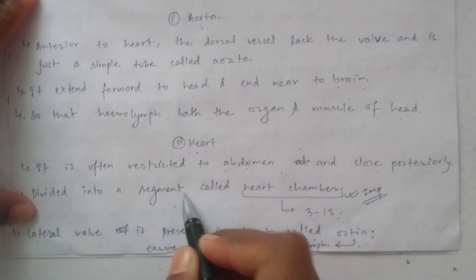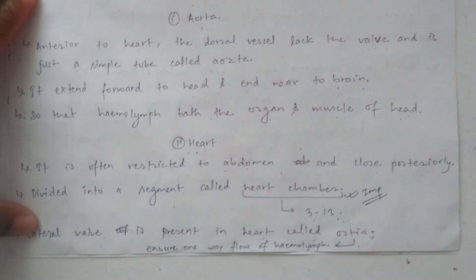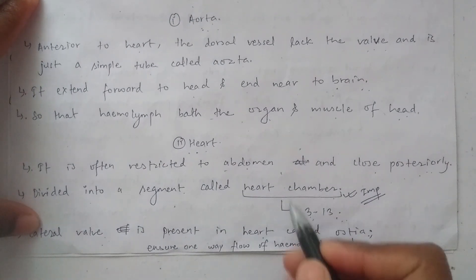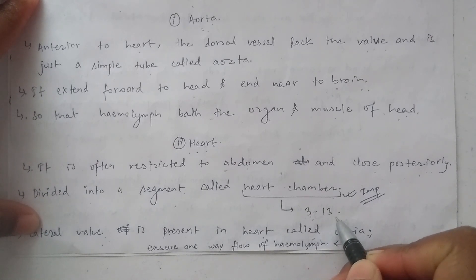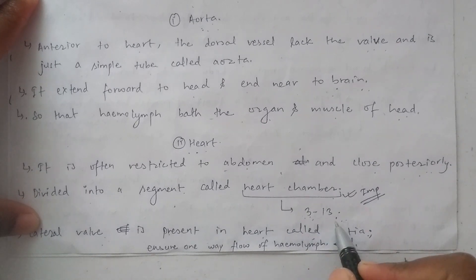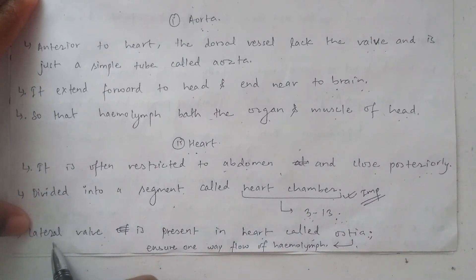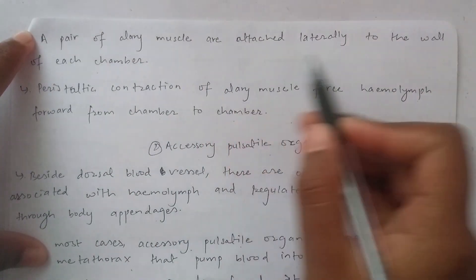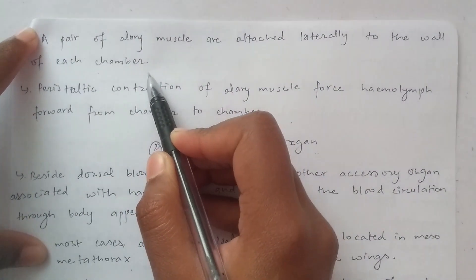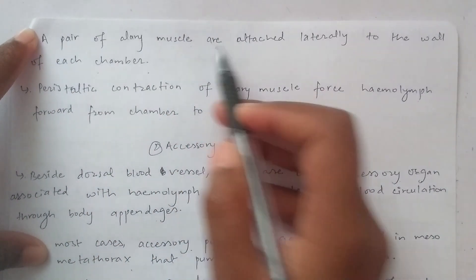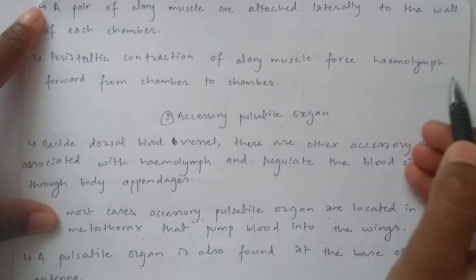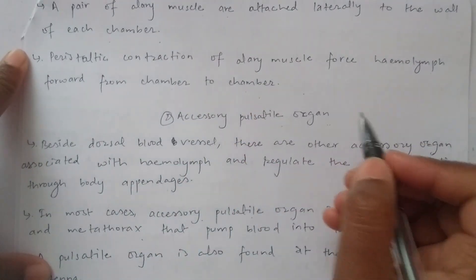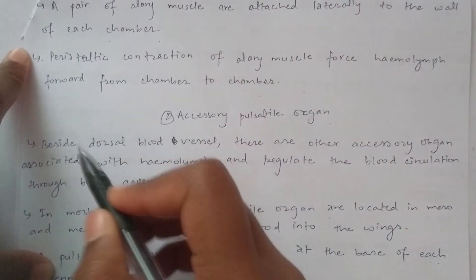The heart can be classified into different segments, called heart chambers. The number of chambers ranges from 3 to 13. The lateral openings in the heart are called ostia, and their main function is to ensure the one-way flow of hemolymph. A pair of alary muscles is attached laterally to the wall of each chamber, and peristaltic contraction of these muscles forces the hemolymph forward from chamber to chamber.